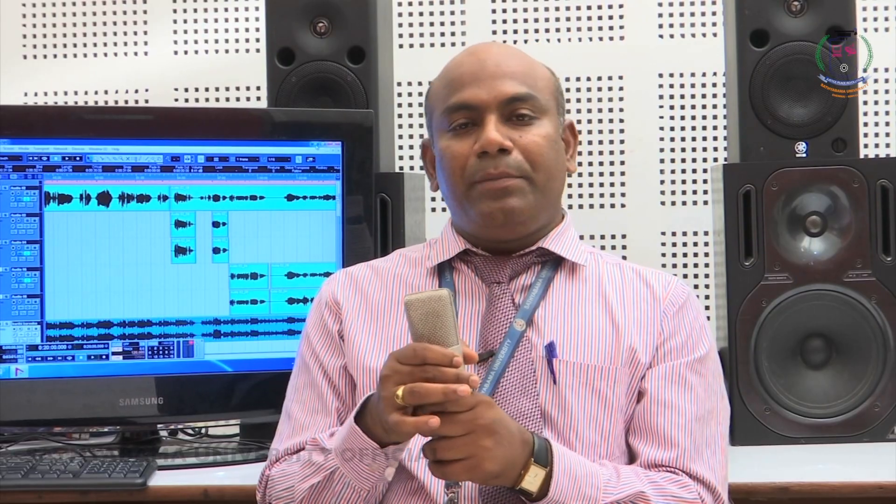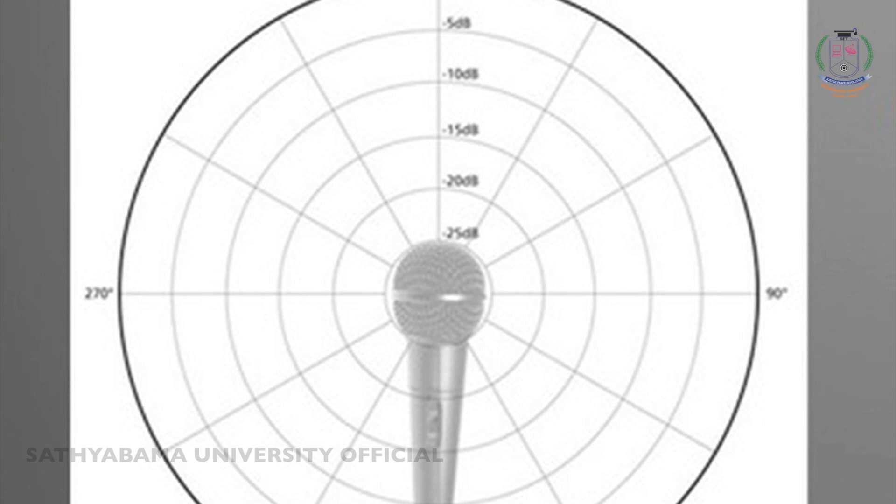So when you do an interview, you can use a bidirectional microphone. The third one is omnidirectional microphone. Omni means all — it will pick up the entire 360 degrees equally. If you place the microphone at the center of a 360-degree circle, it will pick up the entire 360 degrees equally, and the audio is evenly picked up by the microphone.